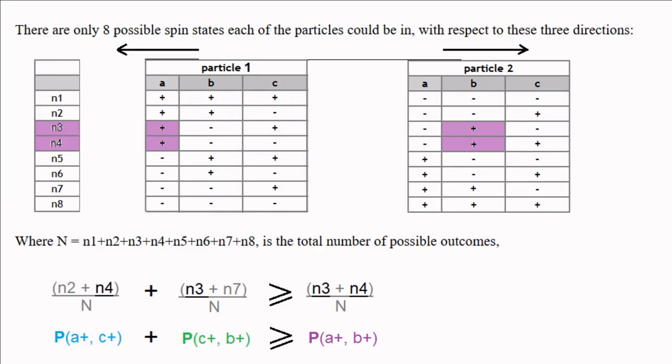In other words, the probability that s1 is plus along a and s2 is plus along c, plus the probability that s1 is plus along c and s2 is plus along b, is greater than or equal to the probability that s1 is plus along a and s2 is plus along b.